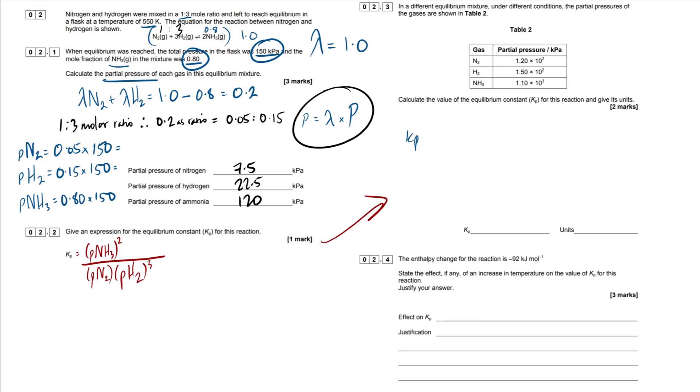So then KP expression is just going to be the partial pressure of ammonia gas, which is 1.10 times 10 to the three. And remember, we have to square that. So square outside the brackets. Next up is our nitrogen gas. So that's 1.2 times 10 to the two, and that's going to be left as to the power of one. And then the partial pressure of hydrogen is going to be 1.5 times 10 to the two, and we're going to have to cube that. So put that in your calculator, and that should give you a value of 2.99 times 10 to the minus three.